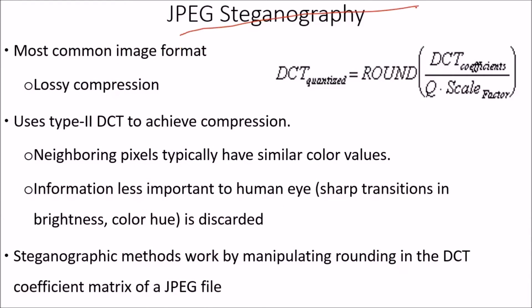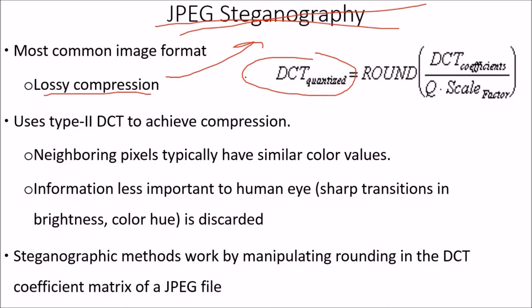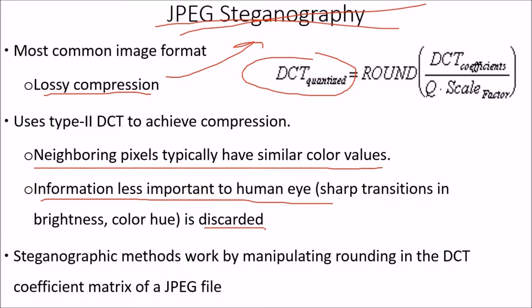JPEG steganography is another important method, since JPEG is the most common image format. JPEG uses lossy compression based on the Discrete Cosine Transform (DCT) — specifically type 2 DCT — to achieve compression. Neighboring pixels typically have similar color values, and information less important to the human eye is discarded. Steganography in JPEG works by manipulating the rounding in the DCT coefficient matrix of a JPEG file to embed hidden data.